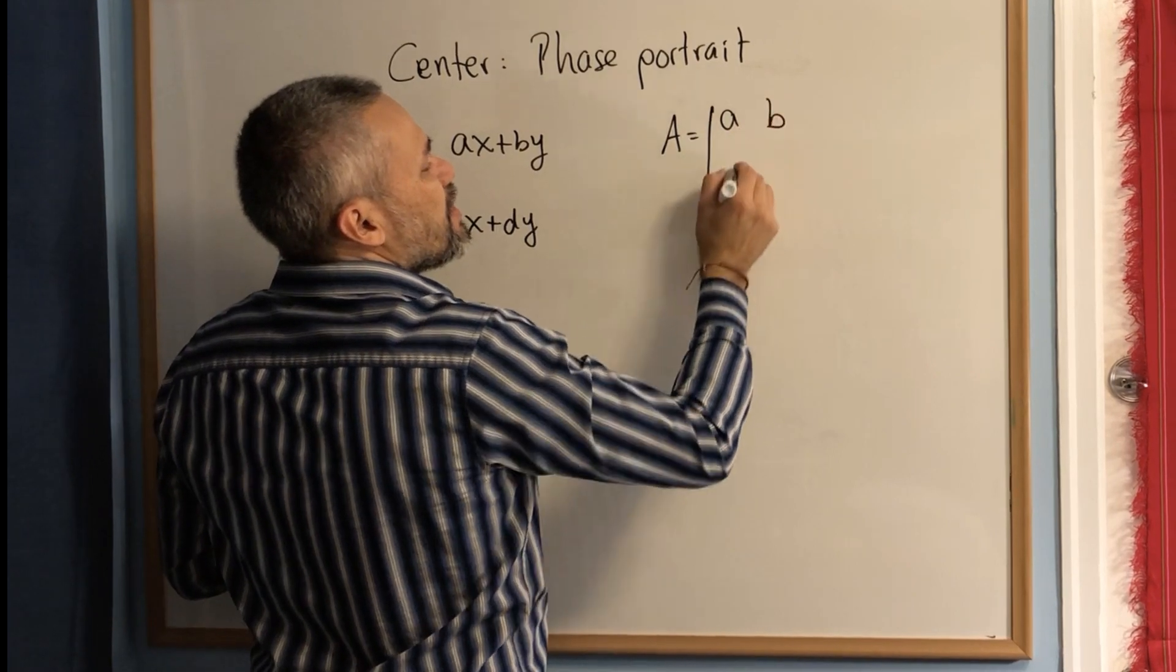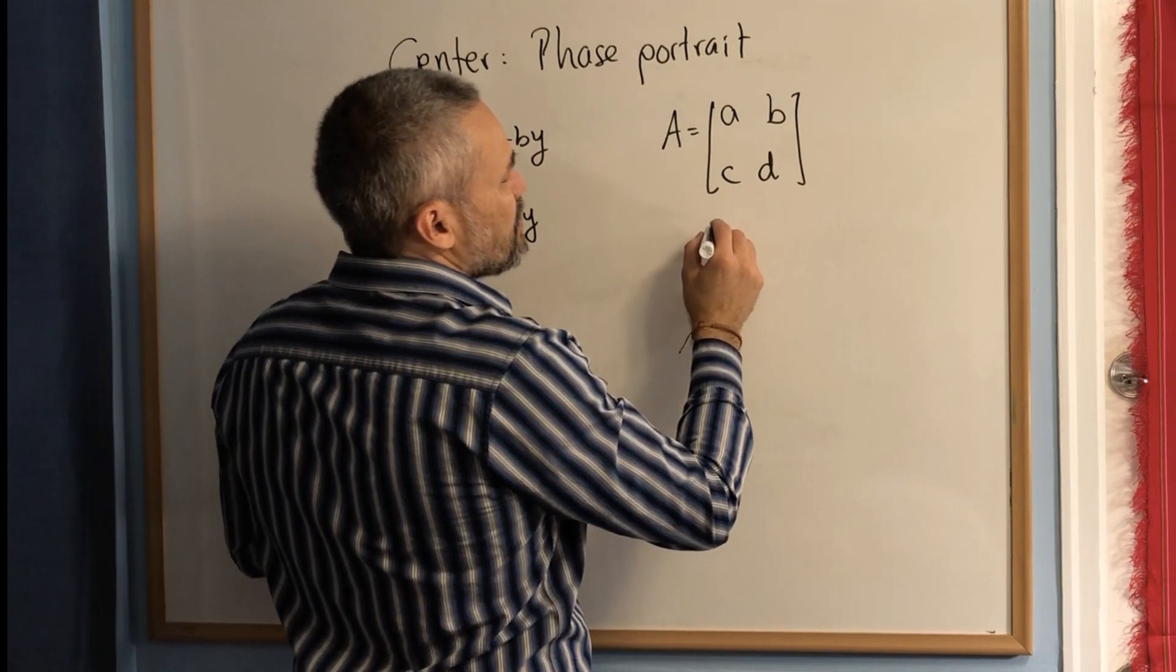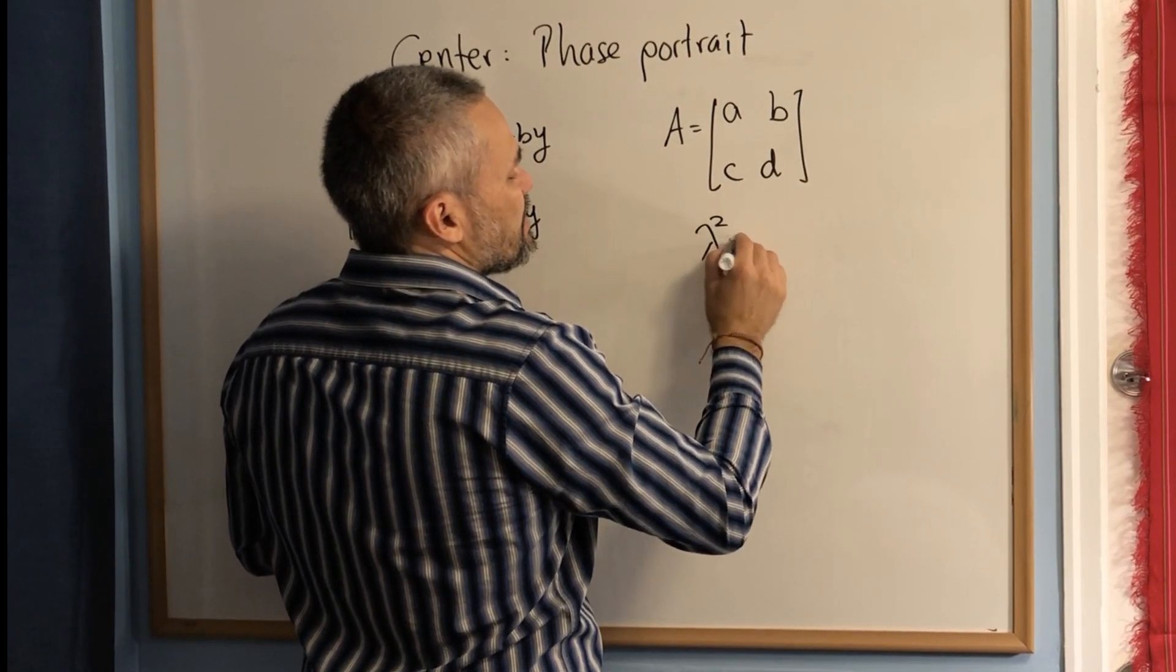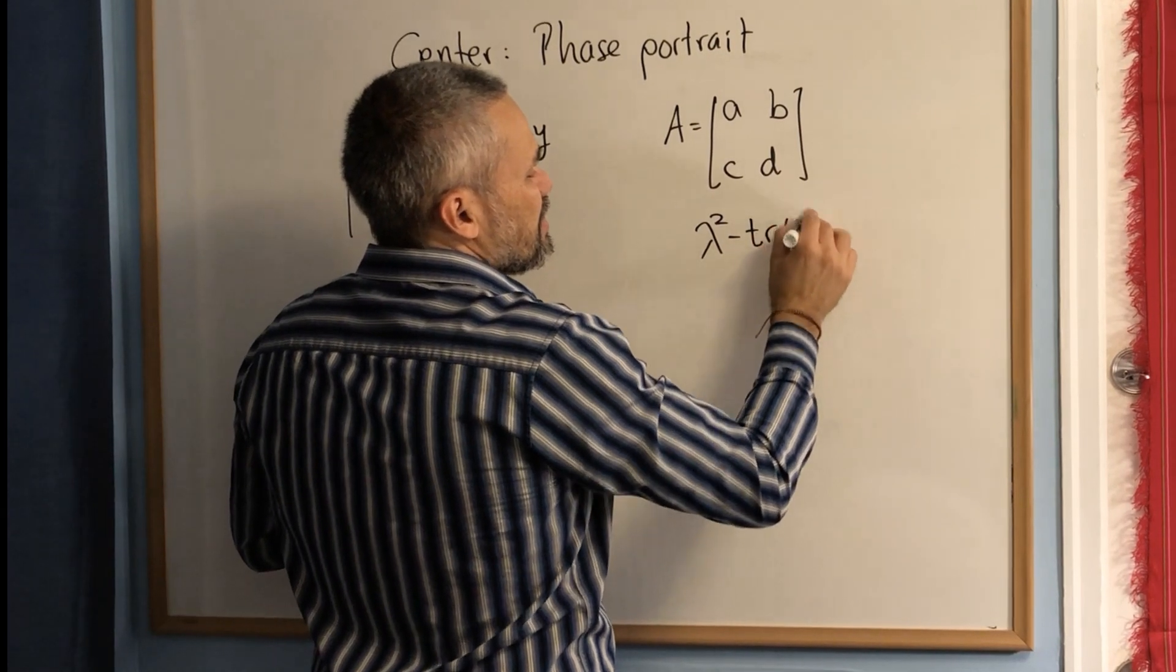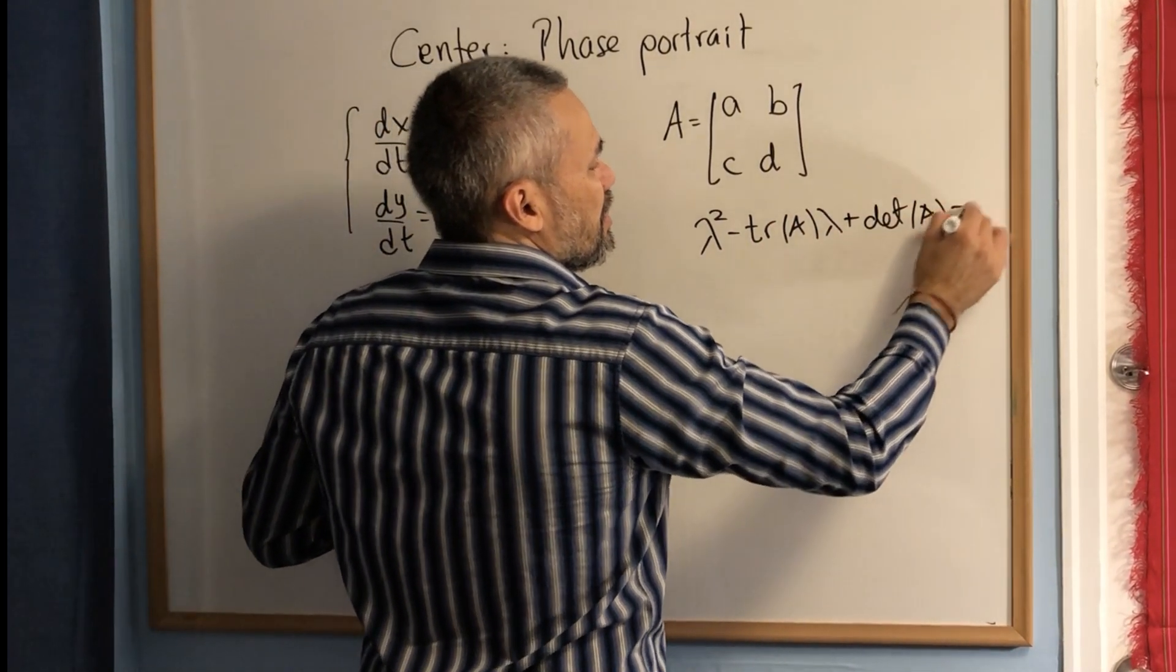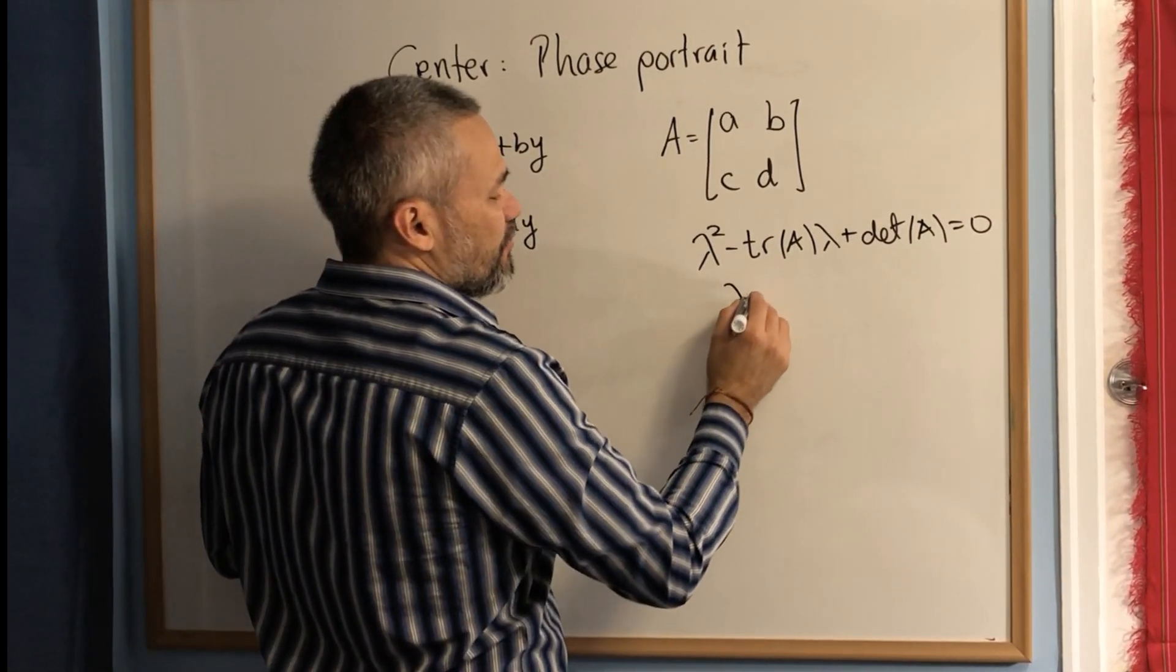The characteristic equation—actually in this case, if you have a center—that means the characteristic equation has only two roots, and they are of the form α ± βi.